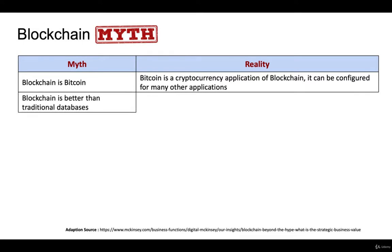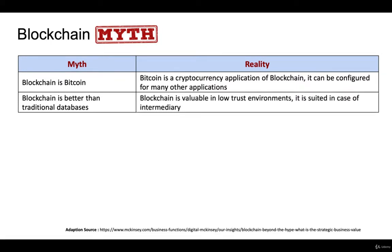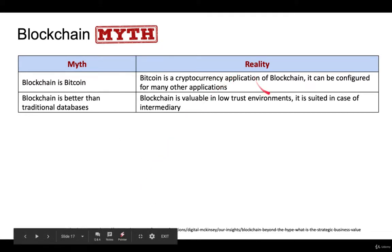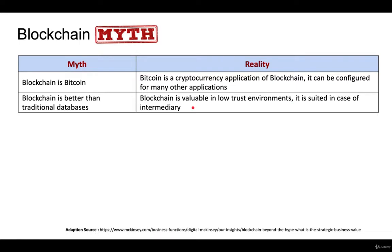The next myth: is blockchain better than traditional databases? It is not better — it is different. In a traditional database, you put data into a table or structure and retrieve it; the database is either centralized or distributed. Blockchain is valuable in a low-trust environment, particularly when there is an intermediary you want to eliminate. Blockchain is not a database — it is a combination of peers that source data when there is no trust in the environment.